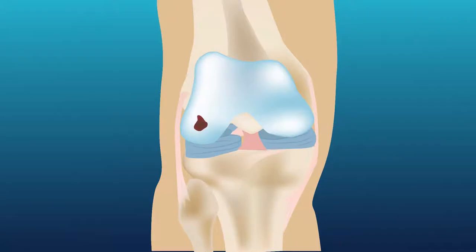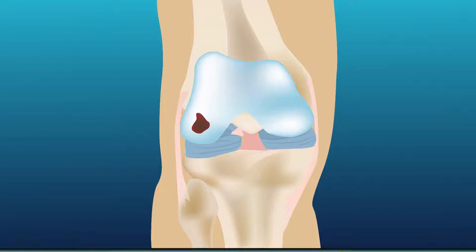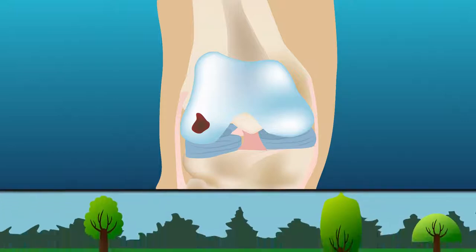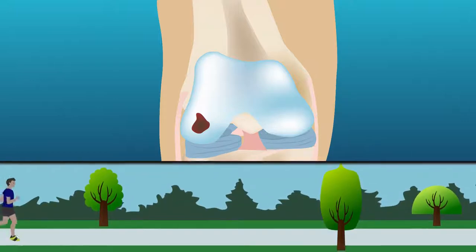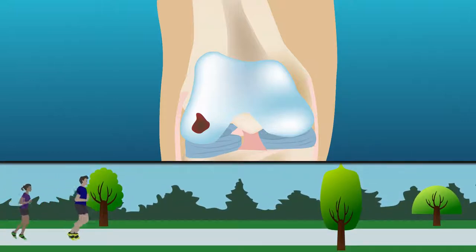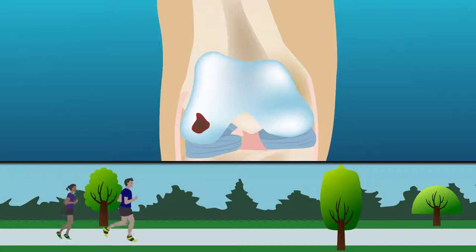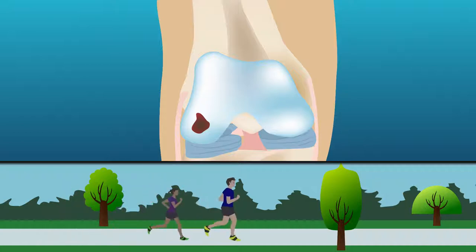Articular cartilage lesions of the knee joint are a common finding during knee arthroscopy. However, the best way to manage these lesions remains unclear, especially when it comes to young, physically active patients.